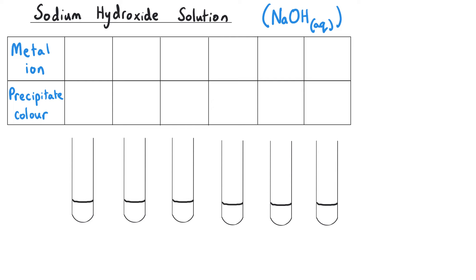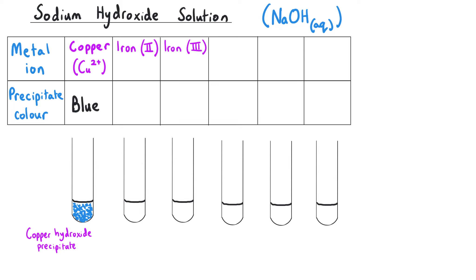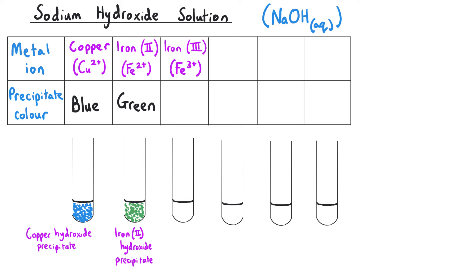Copper 2+ ions in solution will produce a blue precipitate with sodium hydroxide. There are two different iron ions to distinguish between: iron 2+, meaning iron with a +2 charge, and iron 3+, meaning iron with a +3 charge. Iron 2+ will produce a green precipitate with sodium hydroxide solution, whereas iron 3+ will produce a brown precipitate.